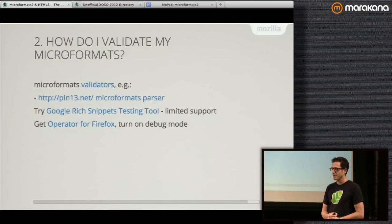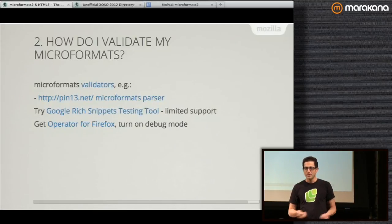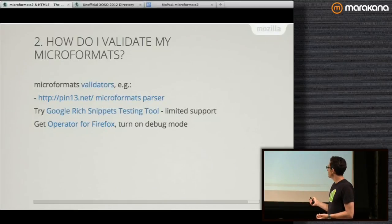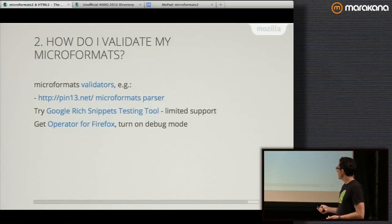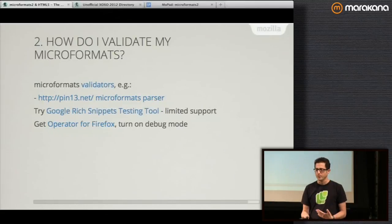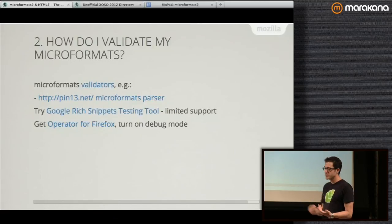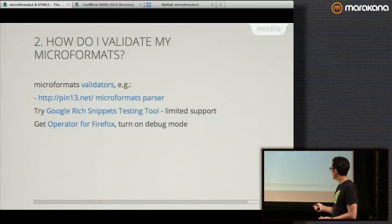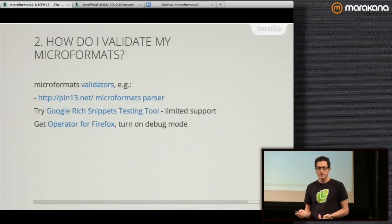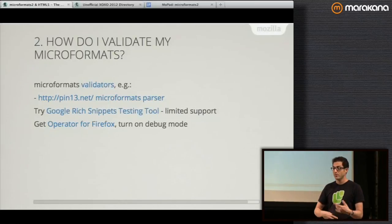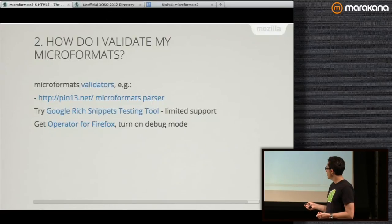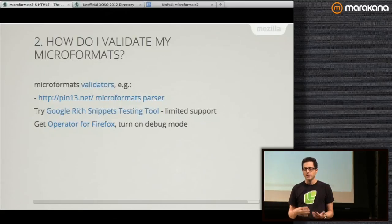Second FAQ: how do I validate my microformats? There's a nice interactive microformats parser at pin13.net — type in your URL and get clean JSON output to see if you're getting the data you expect. You can also use the Google Rich Snippets Testing Tool to see specifically what Google does with your microformats, though it only supports the ones Google currently shows as rich snippets. Finally, the Operator add-on for Firefox has a debug mode useful for local debugging — if you have a local HTML page or JavaScript-generated HTML, you can turn on debug mode to see what data it's getting from what microformats.